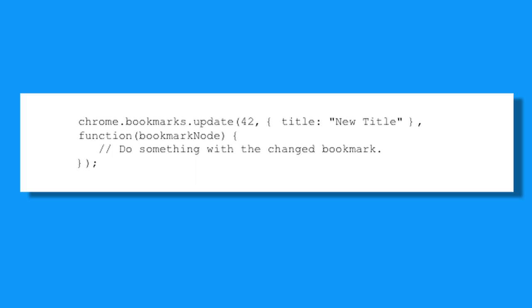Some API calls are synchronous, but many are asynchronous. Here we're asking Google Chrome to modify one of the user's bookmarks by modifying its title. This call is asynchronous, meaning that the code that makes the call will continue executing and the function you provide as a callback will be run sometime later, at which point your code will know that the bookmark has been updated. The reason why this call is asynchronous has to do with Google Chrome's multi-process architecture.